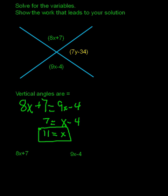Now, in order to verify that I did my arithmetic correctly, what I'm going to do next is simply take the 11, and I'm going to plug that into each one of my two angles, the 8X plus 7 and the 9X minus 4. And if I did my arithmetic correctly, and 11 is the correct value for X, then these two pieces should be the same.